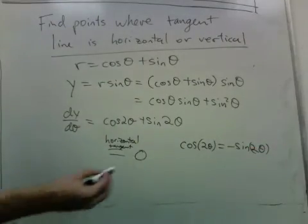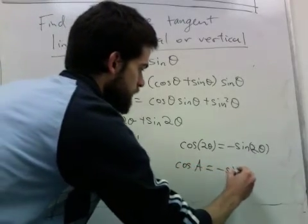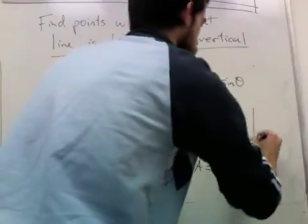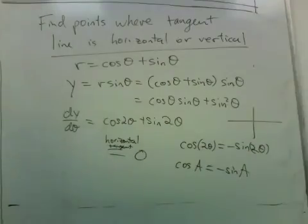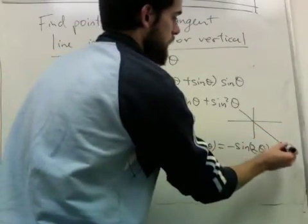And then you think about when does cosine of a equal negative sine of a. Well you can draw a circle. When is the cosine the negative of the sine? That occurs on this line.